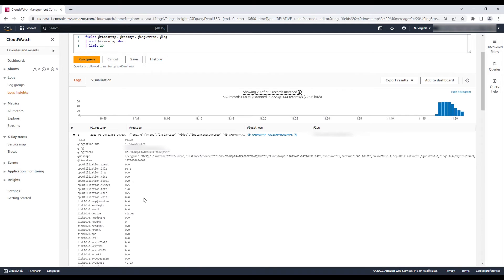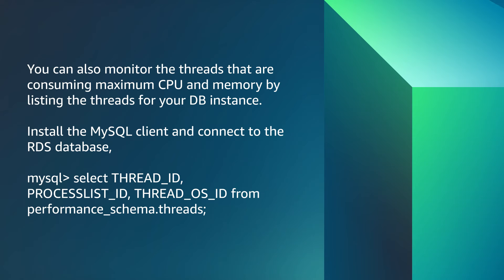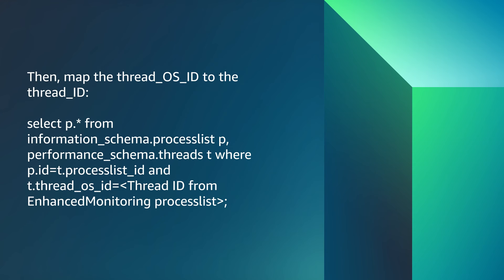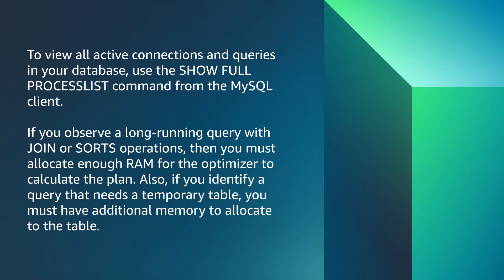With Enhanced Monitoring, you can monitor the freeable and active memory in real time. You can also monitor the threads that are consuming maximum CPU and memory by listing the threads for your DB instance. Install the MySQL client and connect to the RDS database, then map the thread OS ID to the thread ID. To view all active connections and queries in your database, use the SHOW FULL PROCESSLIST command from the MySQL client.